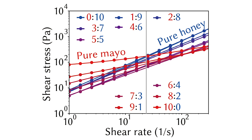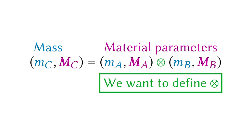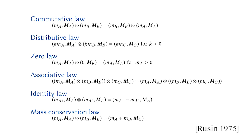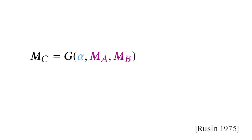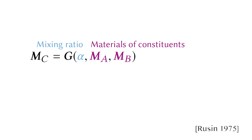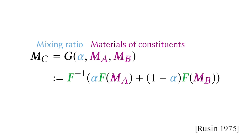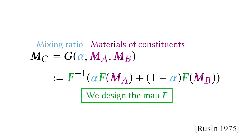We want to come up with a mathematical model that can compute the blended states given the materials of constituents and their masses. We formulate the property of the blending process as a set of laws. Under these laws, there is a general class of the blending map G, taking only the material properties of the constituents and their mixing ratios as input. Furthermore, this map G can be expressed as a linear blending in the space warped by an invertible map F. Our design of the blending model boils down to the design of this map F, acting on the set of parameters of the Herschel-Bulkley model.